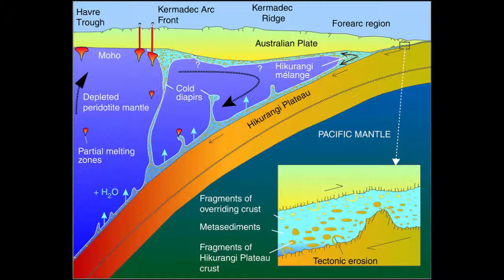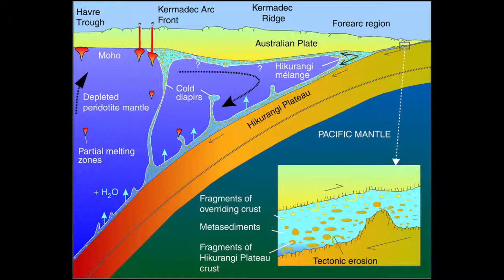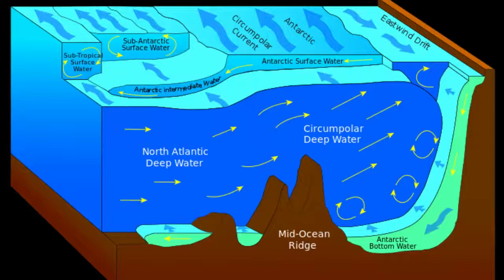Geologists believe that igneous oceanic plateaus may well represent a stage in the development of continental crust, as they are generally less dense than oceanic crust while still being denser than normal continental crust. Density differences in crustal material largely